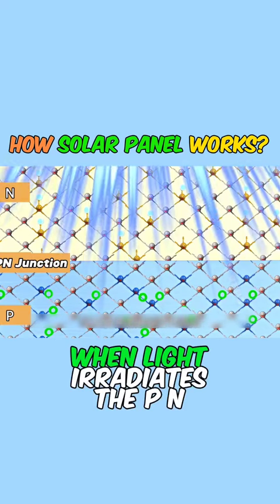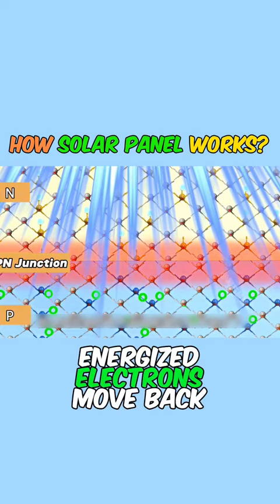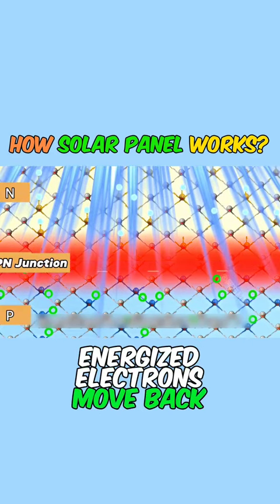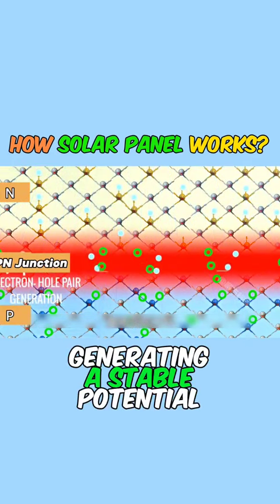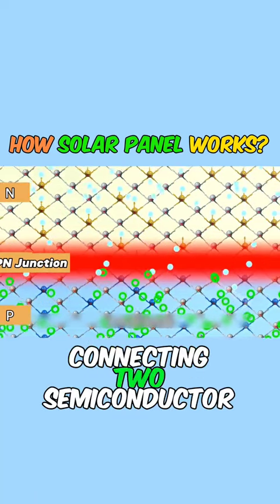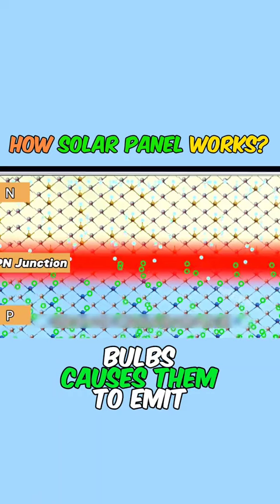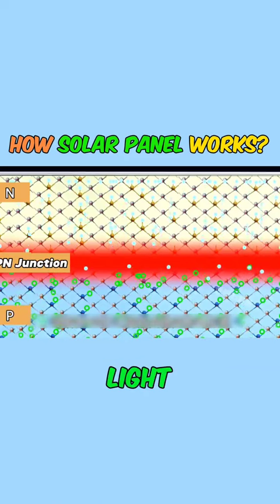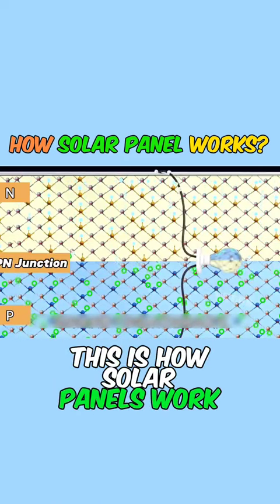When light irradiates the P-N junction, energized electrons move back and forth, generating a stable potential difference between N and P. Connecting two semiconductor light bulbs causes them to emit light. This is how solar panels work.